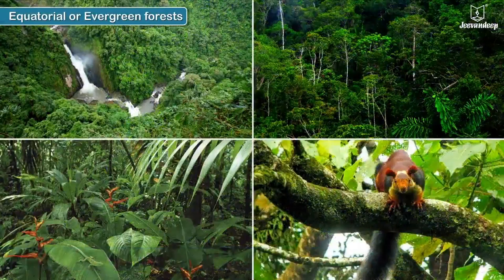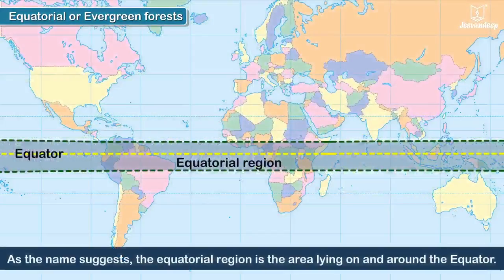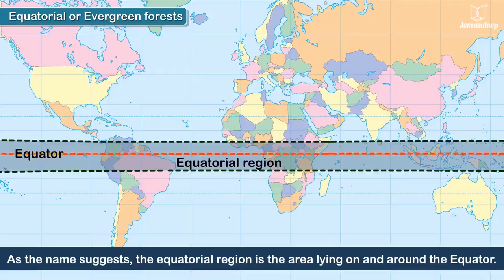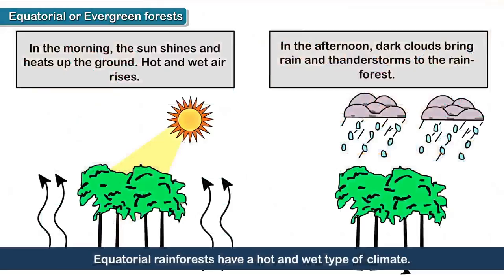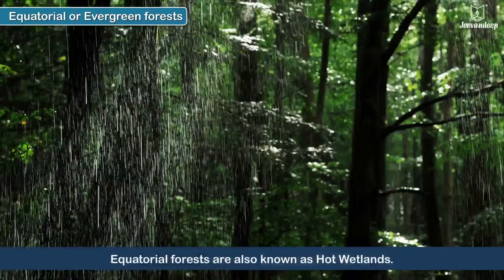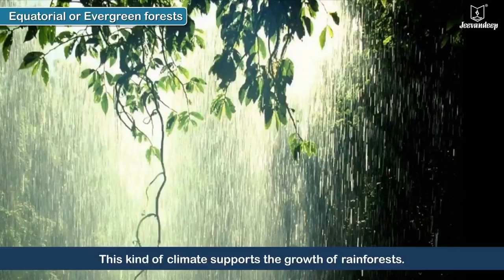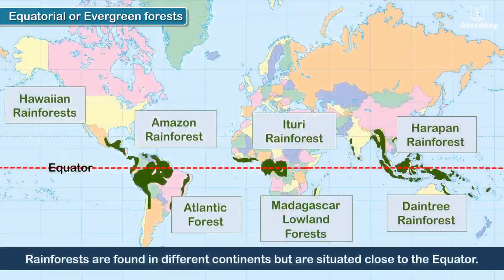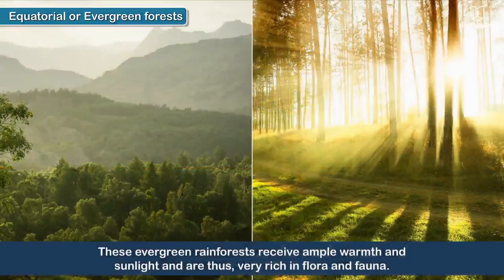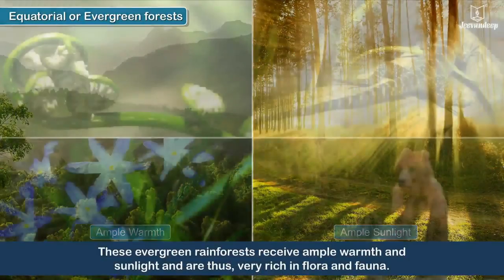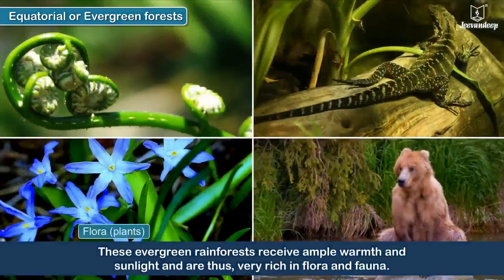Equatorial or evergreen forests: As the name suggests, the equatorial region is the area lying on and around the equator. These areas have a typically hot and wet type of climate and are thus also known as hot wetlands. This kind of climate supports the growth of rainforests. Rainforests are found in different continents but are situated close to the equator. These evergreen rainforests receive ample warmth and sunlight and are thus very rich in flora and fauna.